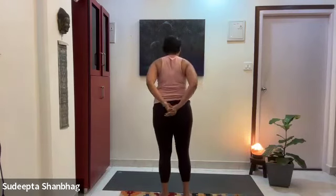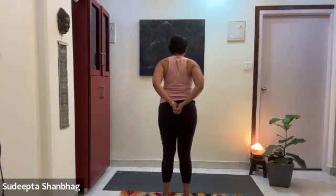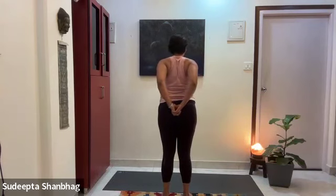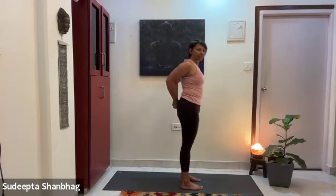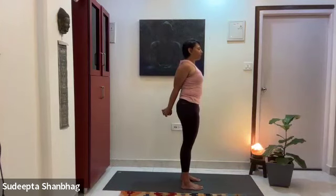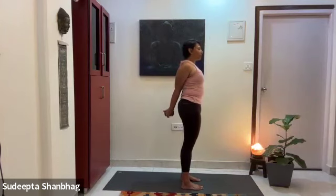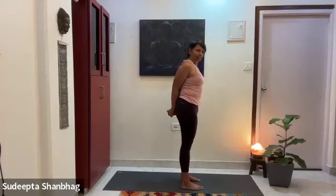Interlock your fingers behind you. Start with elbows bent, then draw your elbows towards each other — they're still bent at this point with your fist against the sacrum. From here, try to straighten the elbows. Remember to squeeze your buttocks slightly so the lower back pressure doesn't increase. Slowly lean back a little bit, then come up.